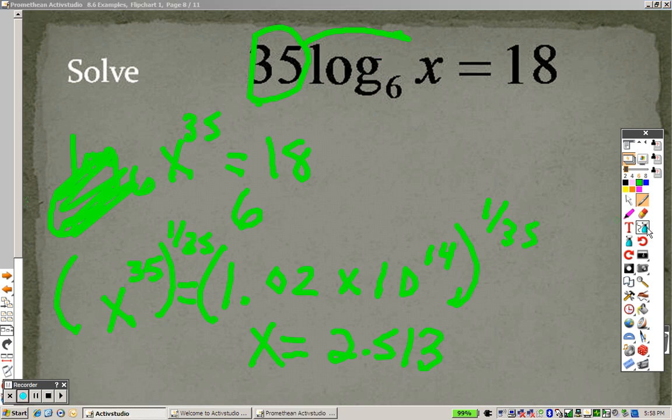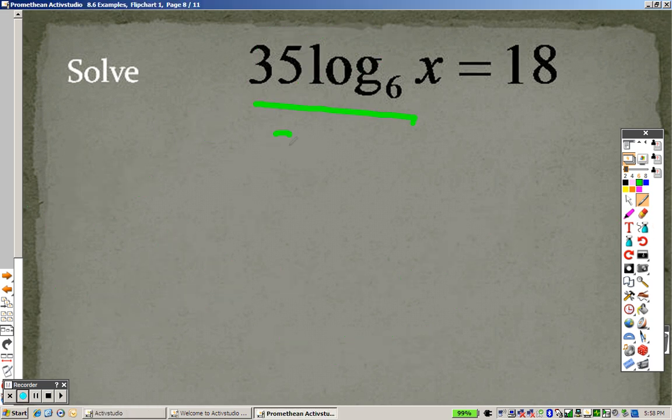I'm assuming if you wanted to, you could try to also divide each of these by 35 to get rid of that. So you get log base 6, x equals 18 over 35. And then I can take each of these to the 6th power. Those cancel out, so you get x equals whatever 6 to the 18 over 35 is. And 6 to the 18 over 35 is the same that we got before, 2.5123.